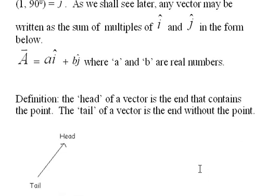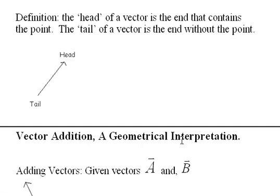Definition, the head of a vector is the end that contains the point, here's the head, and the tail is the other end of the vector. So we can talk about which end of the vector we're talking about.